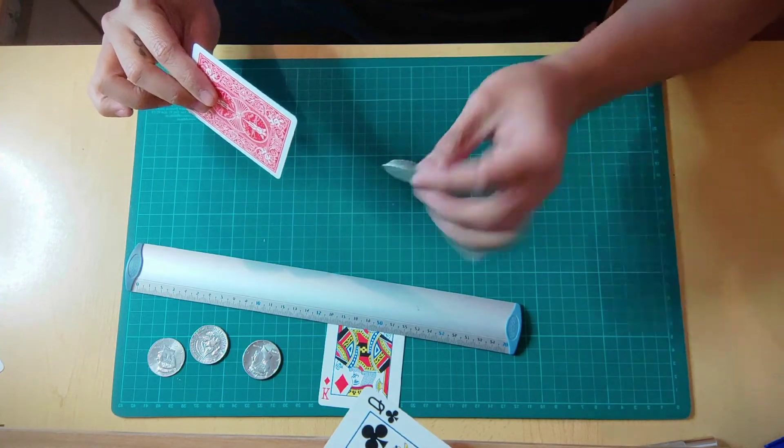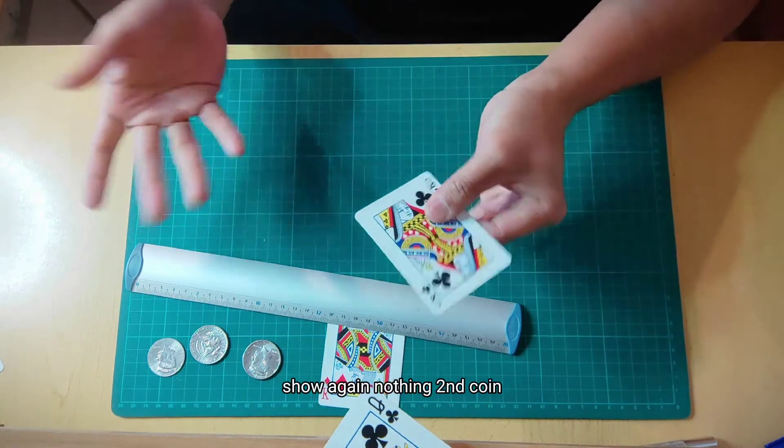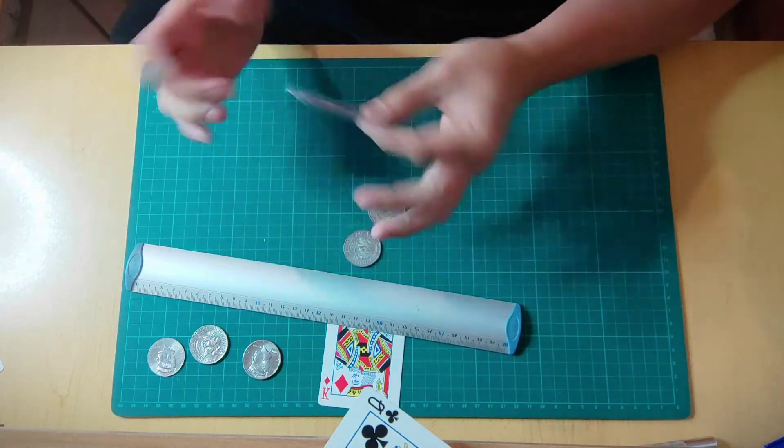And the coin magically appears. One coin. Show again. Nothing. Second coin. That's it.